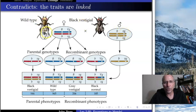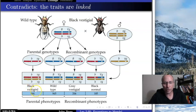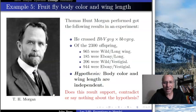The black vestigial individual can only give little b and little v — both homologous chromosomes carry little b and little v, so whatever gametes it makes are only little b little v chromosomes. In the heterozygous individual, big B is on one chromosome with big VG, and little b is on the homologous chromosome with little VG. So when this creature goes through meiosis, one chromosome goes to one gamete giving big B big VG, and the other gives little b little VG.